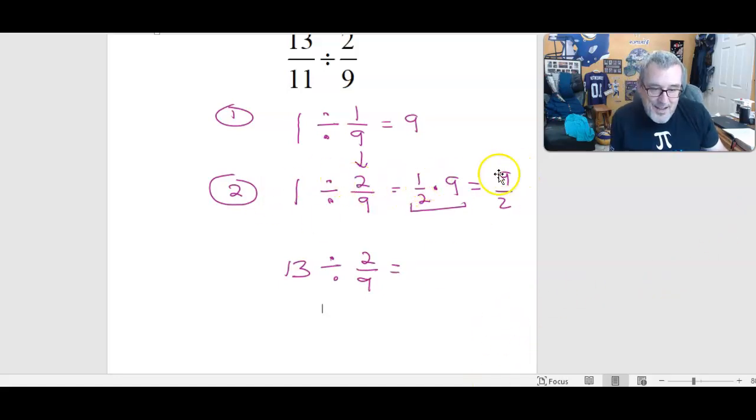Well, if I need 9/2 or 1/2 times 9 copies of 2/9 to make 1, I'm going to have to do that 13 times to get how many 2/9ths are in 13. So I'm going to need 13 times those guys.